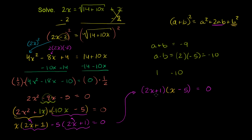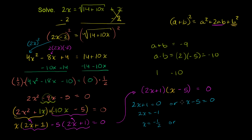If the product of two numbers equals 0, then one or both must equal 0. So either 2x + 1 = 0, giving x = negative 1/2, or x minus 5 = 0, giving x = 5.